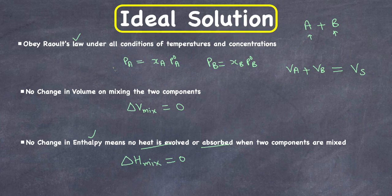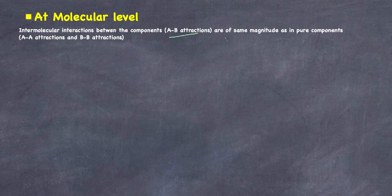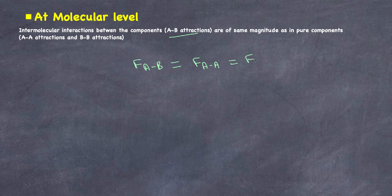At the molecular level, intermolecular interactions between the components, which is A-B attraction, are of the same magnitude as in pure components. The forces of attraction between A and B are exactly the same as the forces of attraction between A and A, and B and B. So FAB equals FAA equals FBB.